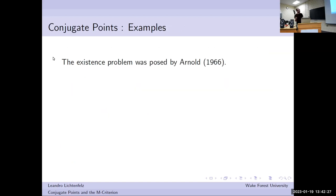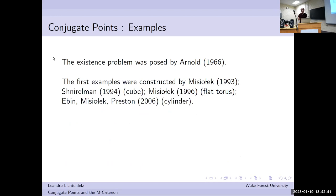Question number one was actually a problem posed by Arnold all the way back in 1966. The very first examples were constructed by Misiolek in 1993 — these are basically related to rotations on spheres, taking conjugate points from finite dimensions and imitating them in the diffeomorphism group. Then Schneiderman in 1994 produced examples on 3D cubes. Misiolek in 1996 showed that the flat two-dimensional torus also has those special configurations. Much later in 2006, Ebin, Misiolek, and Preston constructed examples on a 3D cylinder.